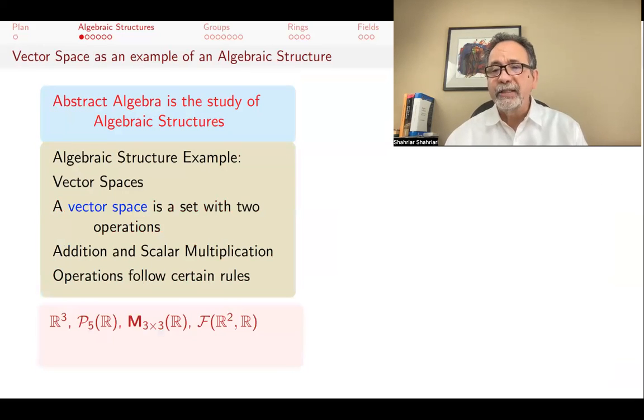Examples of vector spaces may be very familiar: R³, our three-dimensional world, for example. Polynomials of degree less than or equal to 5 is another vector space. The set of 3 by 3 matrices with real entries or functions from R to R are all examples of vector spaces.